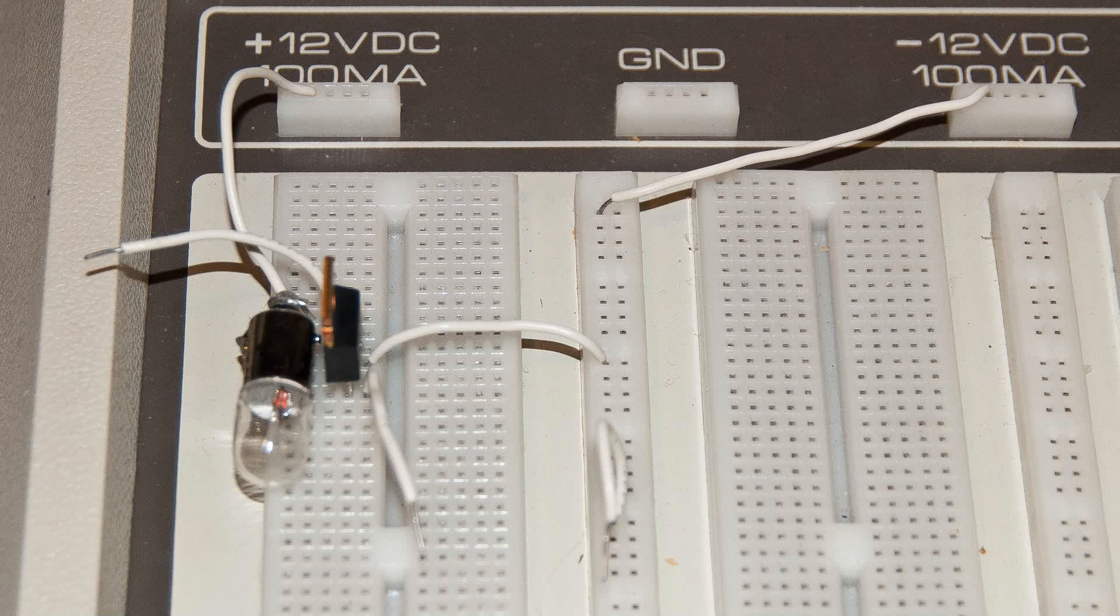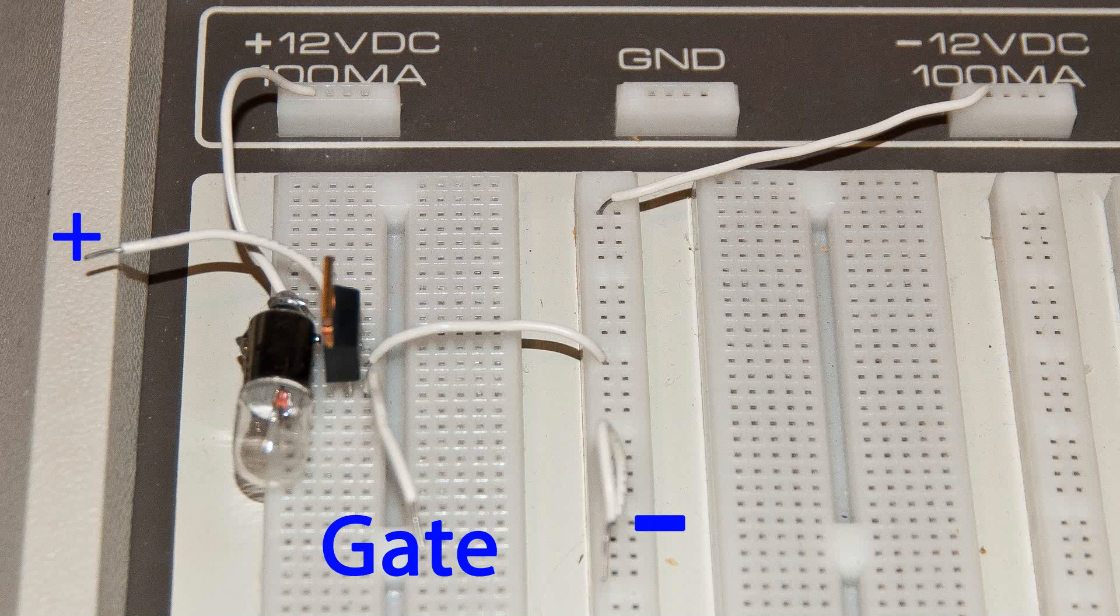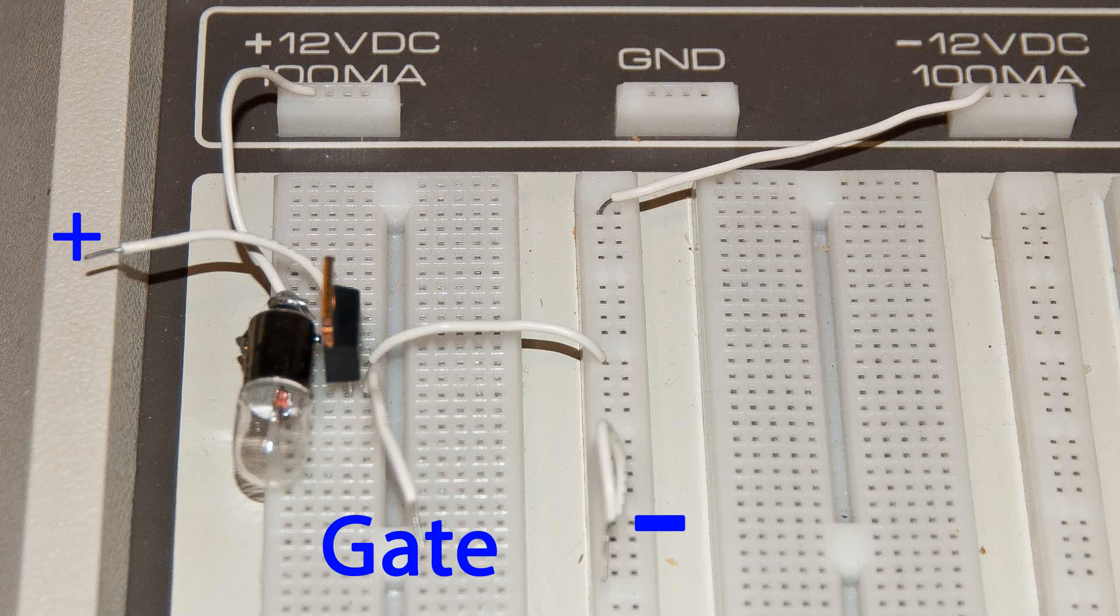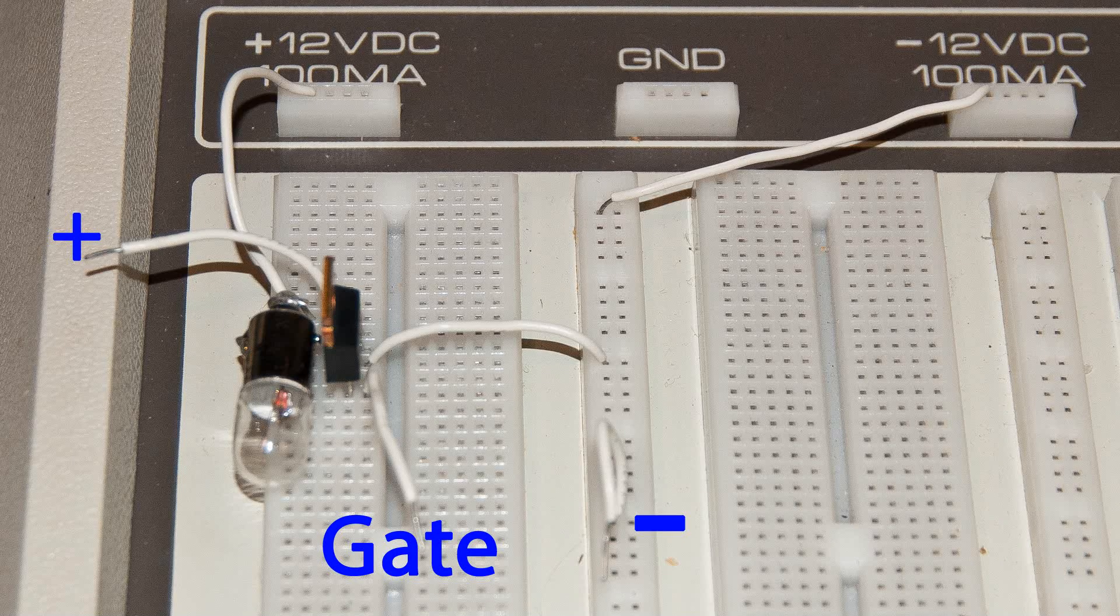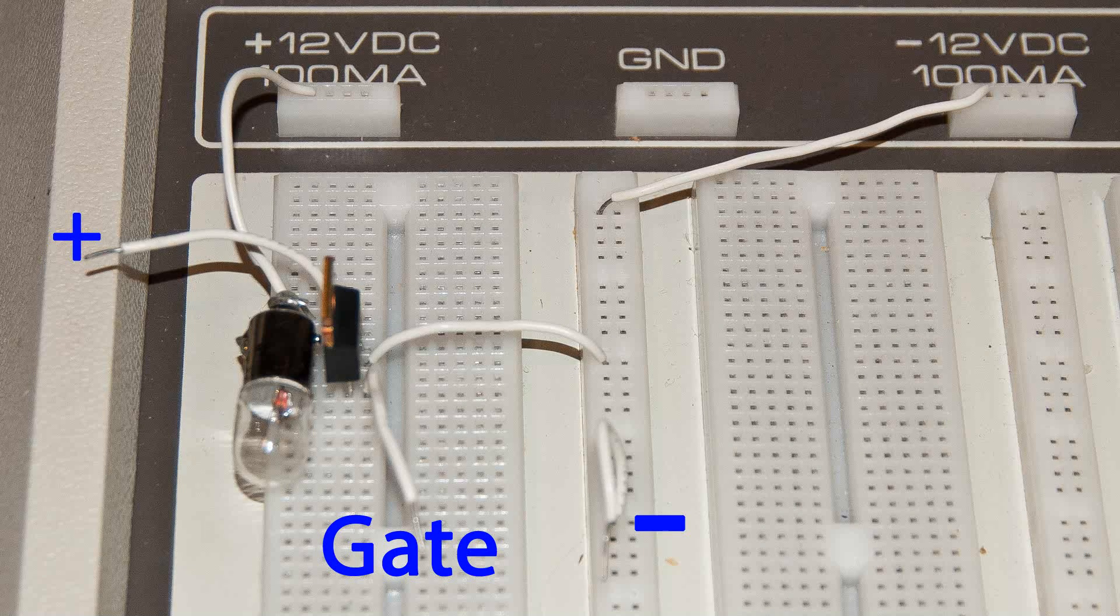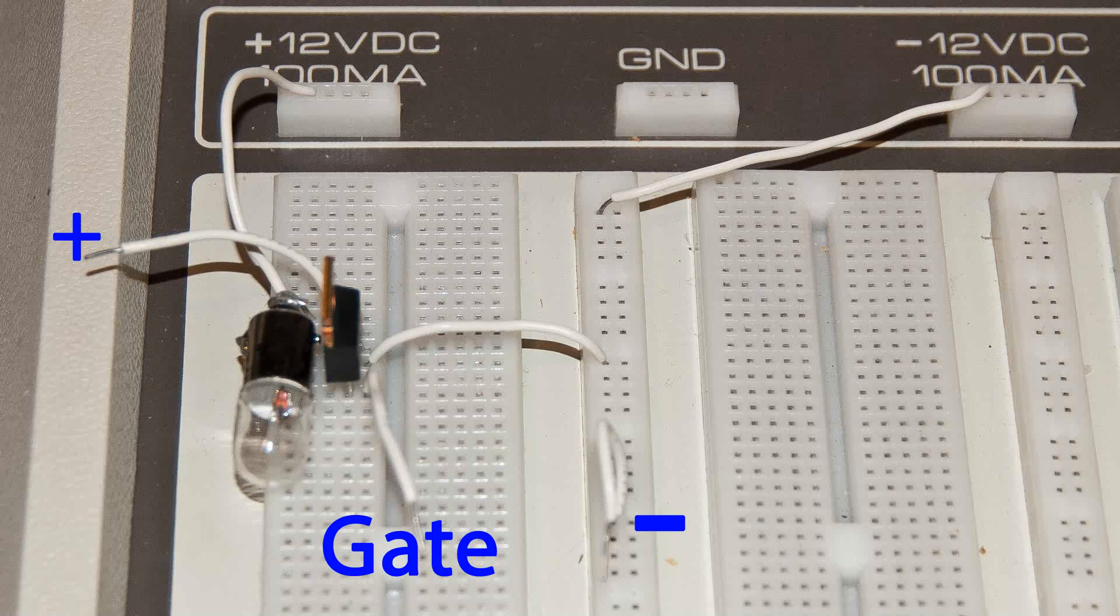It's hooked up to 24 volts. We've got positive on the left, and the center wire that's open is the gate of the MOSFET. And then on the right is our negative connection.